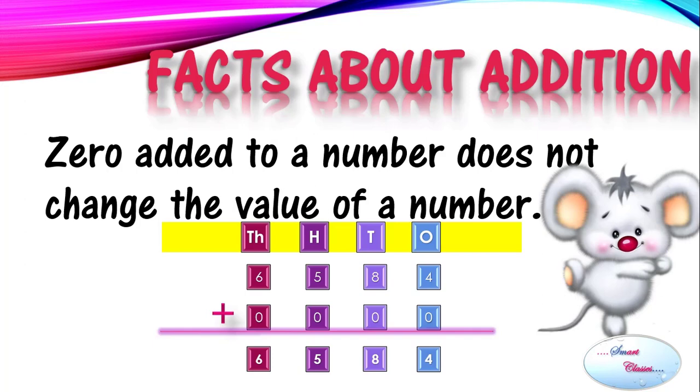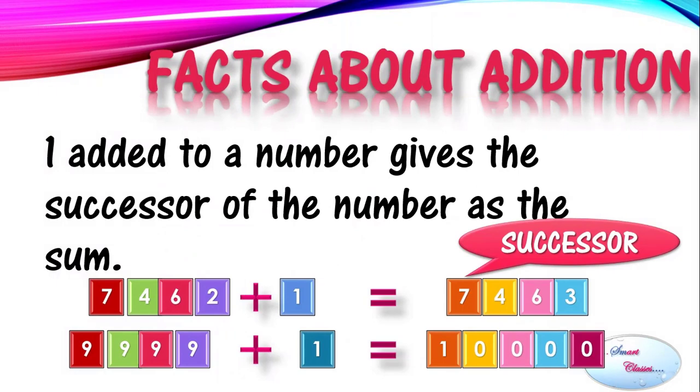Moving towards another fact, one added to a number gives the successor of the number as the sum. For example, 7462 plus 1 equals 7463, which is its sum and this is also the successor. Another example here: 9999 plus 1 gives us 10,000 as the sum, which is also the successor of 9999.